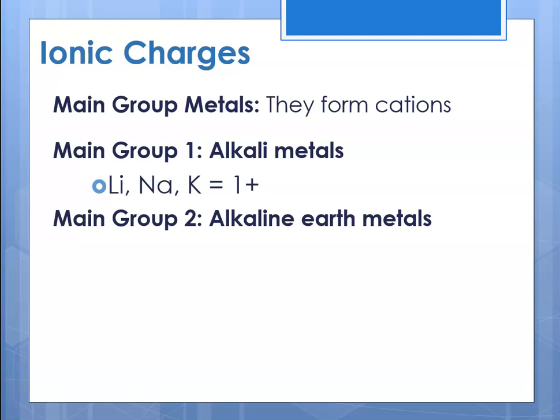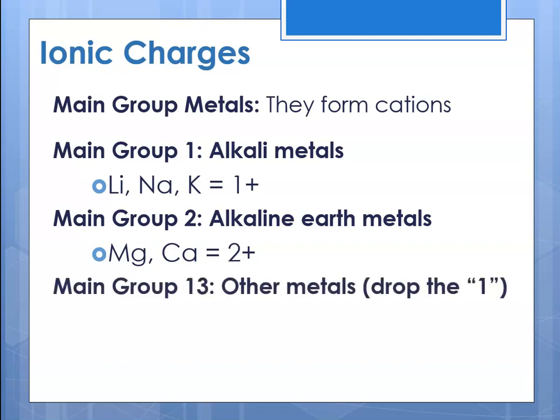If we're talking about the main group two elements — vertical columns in the periodic table all the way over on the left — group two are the alkaline earth metals, and they all have a charge of plus two, so magnesium, calcium, and so forth. For main group thirteen, or three, depending on your periodic table, the metals in that region of the P block have a charge of plus three. The only main group metal in the P block we'll talk about a great deal would be aluminum, with a charge of plus three.